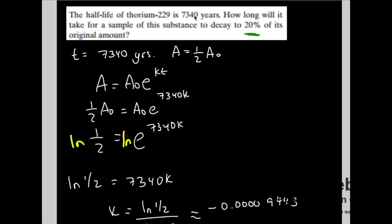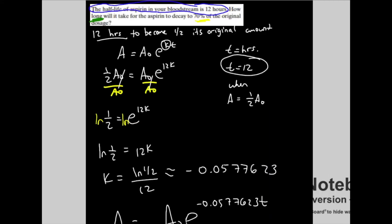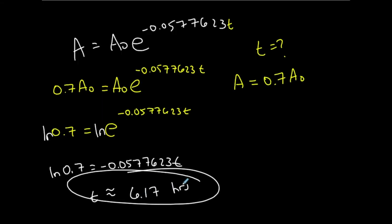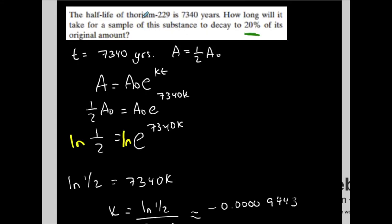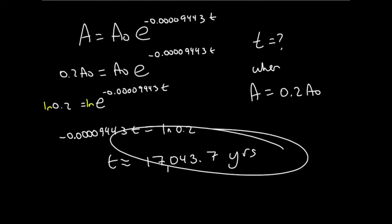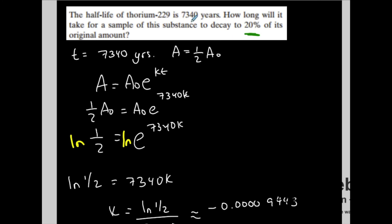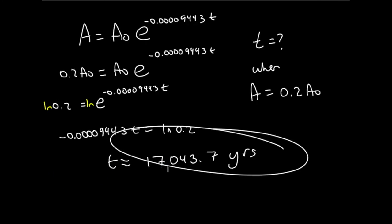Let's verify these answers make sense. In the aspirin example, 6.17 hours was less than the 12-hour half-life — that makes sense because 70% is more than half the original amount, so it hadn't reached half yet. For Thorium, 20% is less than half the original, so we expect the time to be greater than the half-life of 7,340 years — and 17,043.7 years is indeed greater.